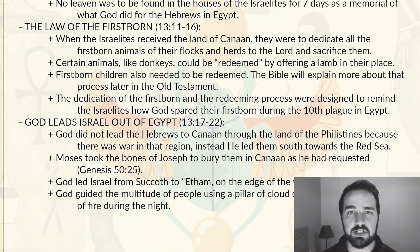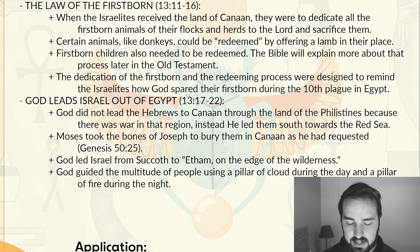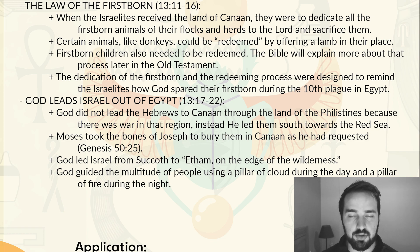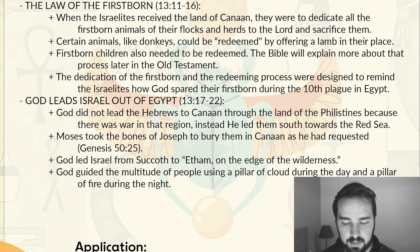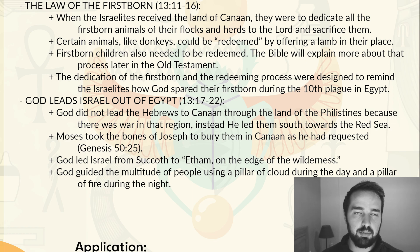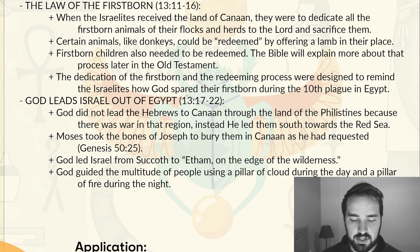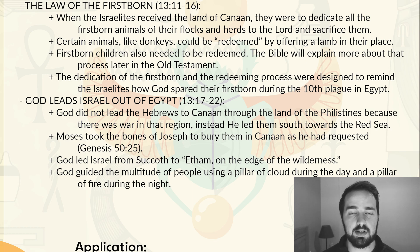In verses 11 through 16, we come back to the principle of the firstborn. When the children of Israel received the land of Canaan as God had promised, they were supposed to dedicate all the firstborn of their flocks and herds to the Lord and sacrifice them. Certain animals like donkeys could be redeemed — a lamb could be offered in place of that donkey. Firstborn human children also needed to be redeemed, and the Bible explains more about that process later in the Old Testament. This dedication was designed to remind Israel how God had spared their children when he sent the 10th plague on Egypt.